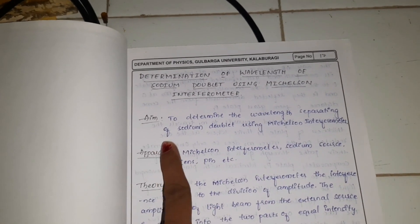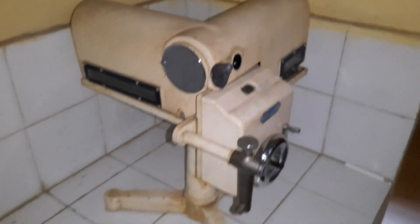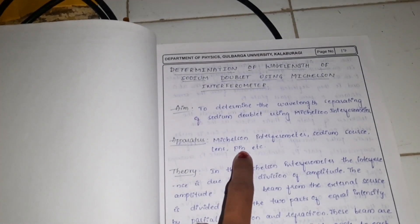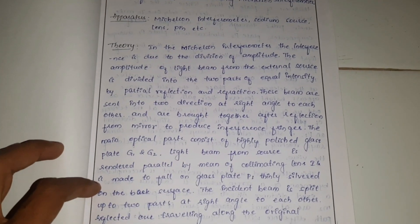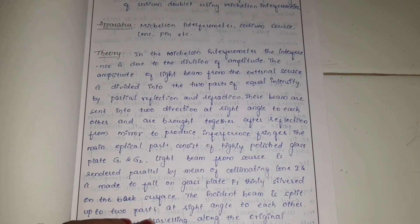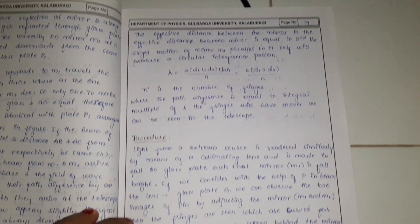We will study the Michelson interferometer. The aim of the experiment is to determine the wavelength separation of the sodium doublet using the Michelson interferometer. The apparatus required includes the Michelson interferometer, a sodium source, a lens, and a pin. You should try to understand the theory of how interference takes place in the Michelson interferometer.